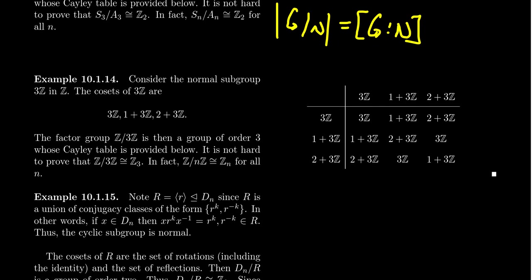Let's look at another example. This time, we're going to take the integers Z and look at the normal subgroup 3Z — the multiples of three. This subgroup has index three: there are three cosets corresponding to numbers congruent to 0 mod 3, 1 mod 3, and 2 mod 3. When you start combining these cosets, taking a multiple of three plus a multiple of three gives a multiple of three; a remainder-0 plus a remainder-1 gives remainder 1; a remainder-0 plus a remainder-2 gives remainder 2.